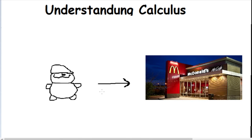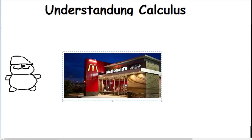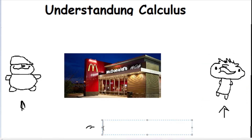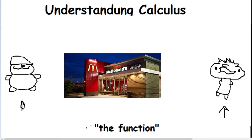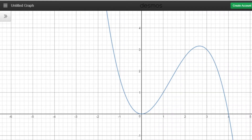We have this McDonald's and we have two little boys going towards it. These two little boys are the function. They're both heading towards McDonald's, so you'd say that McDonald's is the limit of the function — the destination where both sides are heading towards.